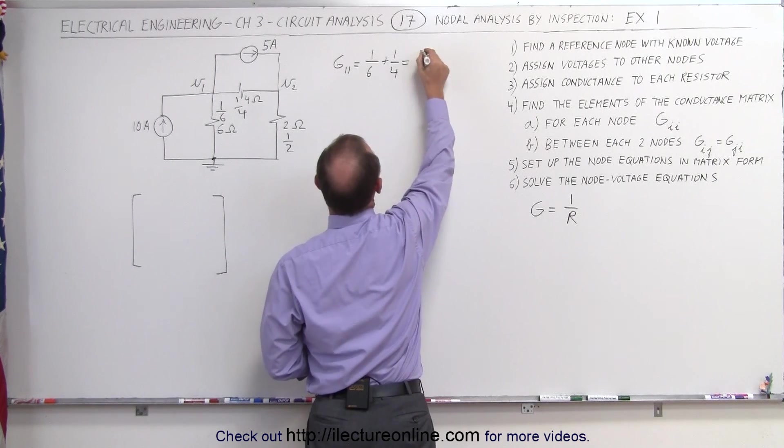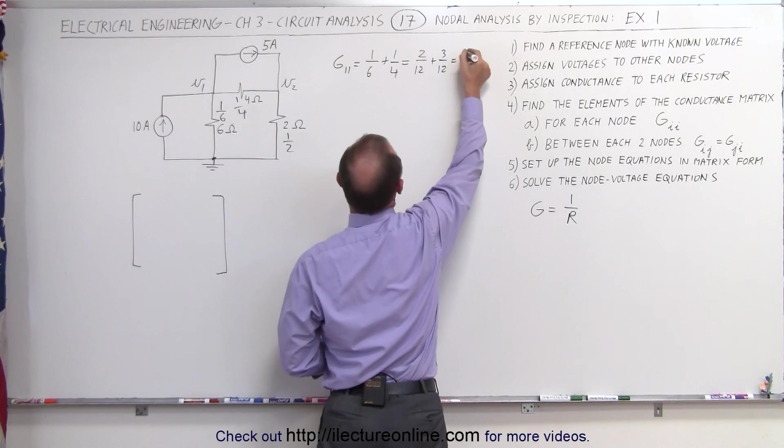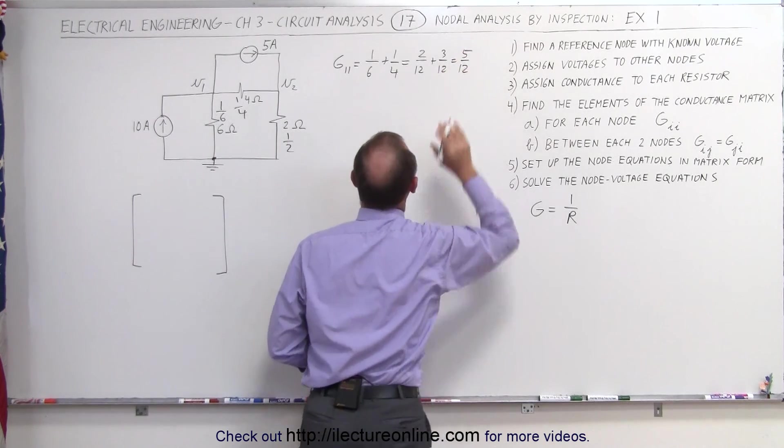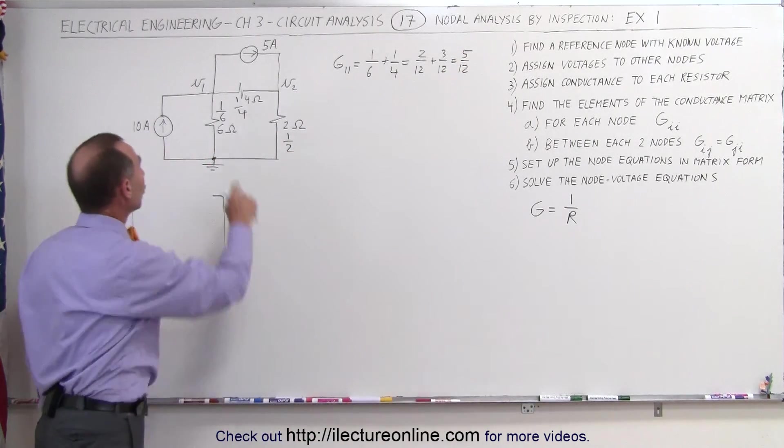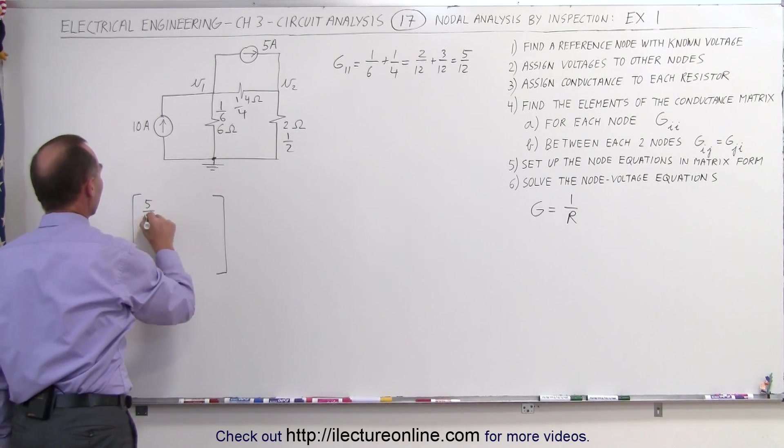So we get 2/12 plus 3/12, which is 5/12. So that's the sum of the conductances connected to node 1. That element goes in here. Here we get 5/12.